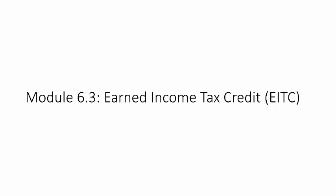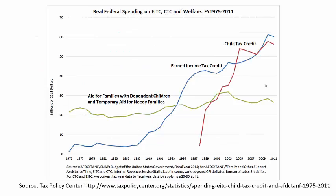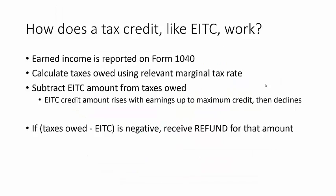In this module, we'll learn about how the EITC is structured and a bit about its effects on the poor and on work incentives. As this graph from an earlier module shows, the EITC cost approximately $68 billion in 2014 and went to roughly 28 million households. Growth in spending on the EITC is striking. Since the 1990s, there has been a clear reversal in the relative prominence of cash welfare versus the EITC and support for low-income working families through the tax system.